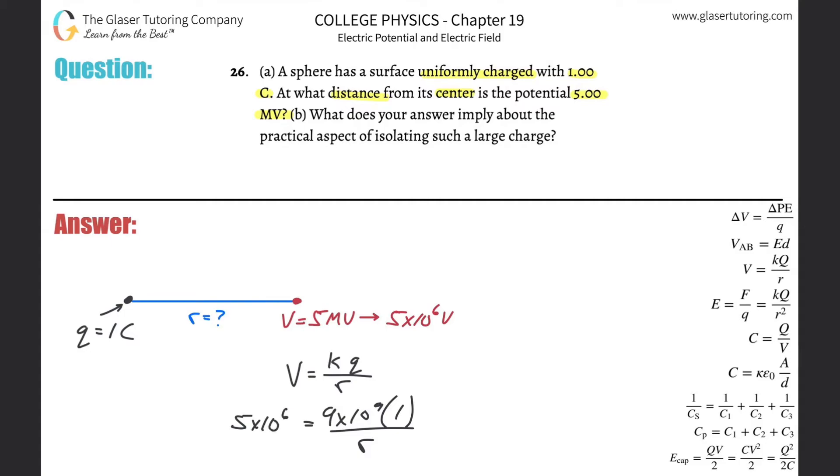So this is 5 times 10 to the sixth. All we got to do is a little cross multiplication—move the r on up, move this on down to solve, and bada bing bada boom, there we go.